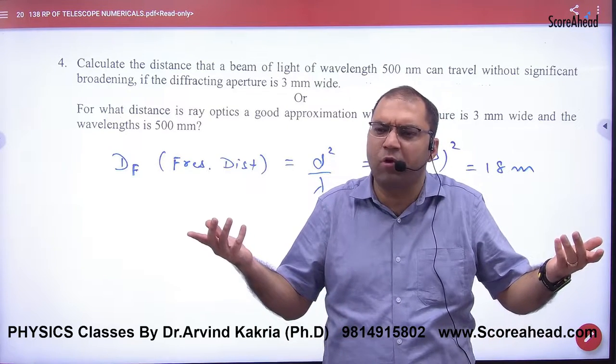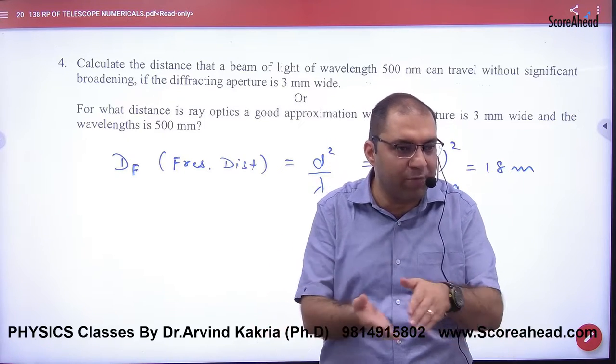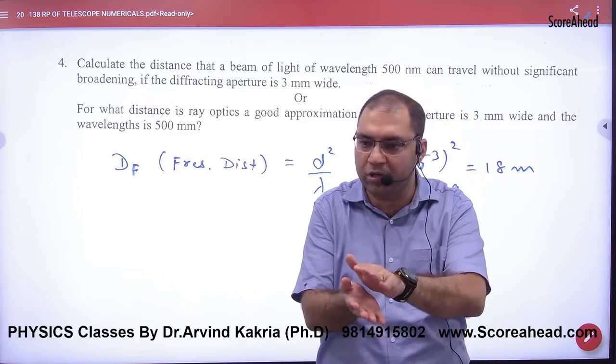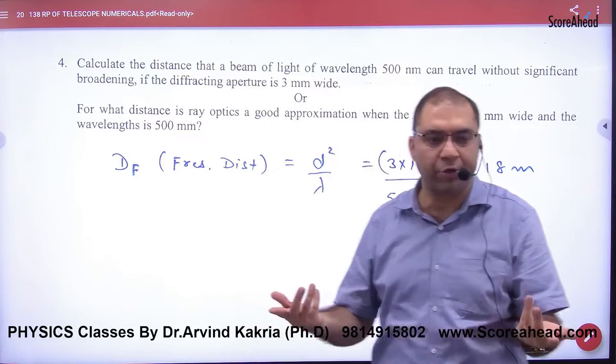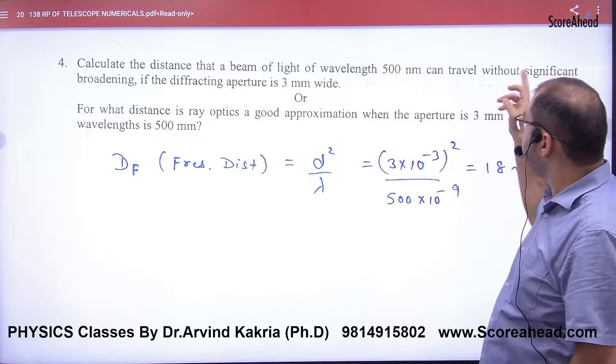Not much significant broadening. This means that ray optics and wave optics have a confusion. Significant broadening means wave optics. If it has not occurred, it is not significant broadening. Aperture is given to you. What do you want to find? Distance that beam of light of wavelength can travel.